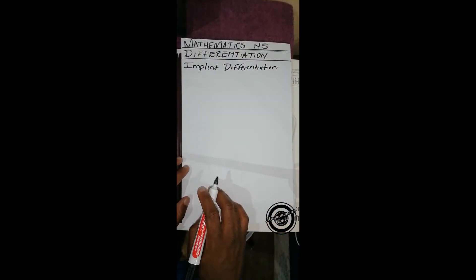Implicit differentiation is where we differentiate a function that has two variables, for example x and y. In order to explain that,